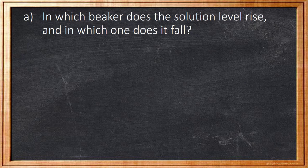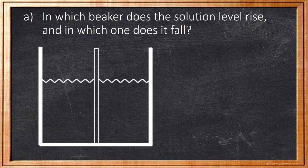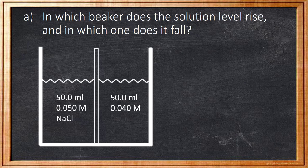Let's come to the first question. In which beaker does the solution level rise, and in which does it fall? We know that the first beaker contains 50 ml of a 0.05 molar solution of sodium chloride. In the other beaker, we have 50 ml of a 0.04 molar solution of calcium chloride. Sodium chloride consists of two ions, sodium and chlorine. This means we have an ion concentration of 2 times 0.05 which equals 0.10.